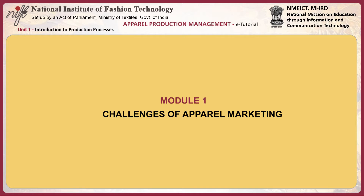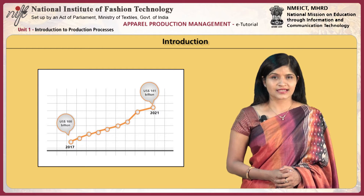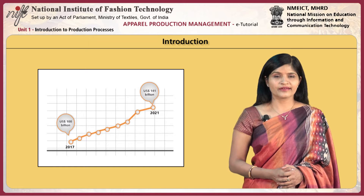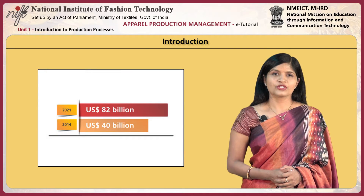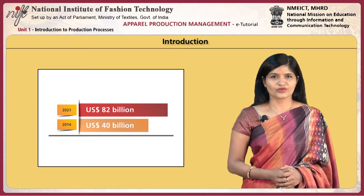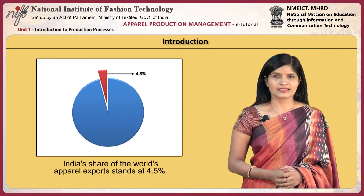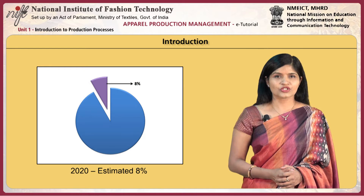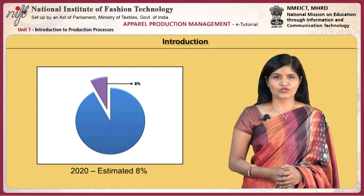The first module reviews the challenges of the apparel market, beginning with a brief analysis of the Indian textile and apparel industry. India is the world's second largest producer of textiles and garments. The domestic textile and apparel industry is estimated to reach US$100 billion by 2017 and US$141 billion by 2021, from US$67 billion in 2014. India's share of world apparel exports stands at 4.5%, expected to grow to 8% by 2020 due to increasing production shifts to Asian nations and deteriorating export competitiveness of China.